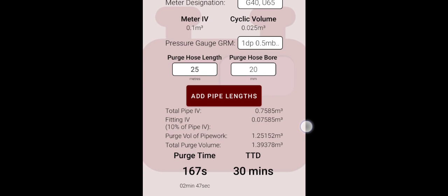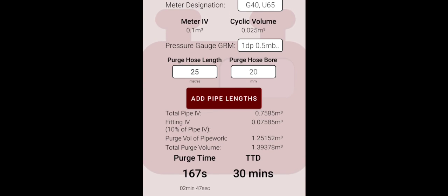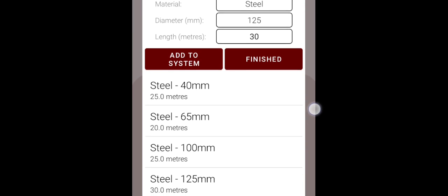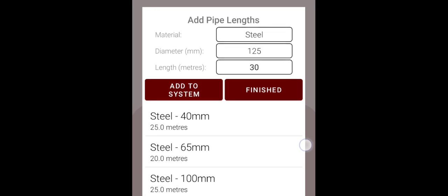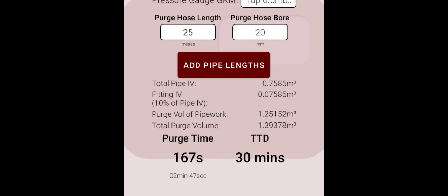I used this calculator, put all my details in, and it worked out that the purge time should be 167 seconds. Here's all the pipework being added into the app and I got 167 seconds, then my total purge volume was 1.39 - I got about 1.4. So it showed me that the calculation was right and the purge app was right.